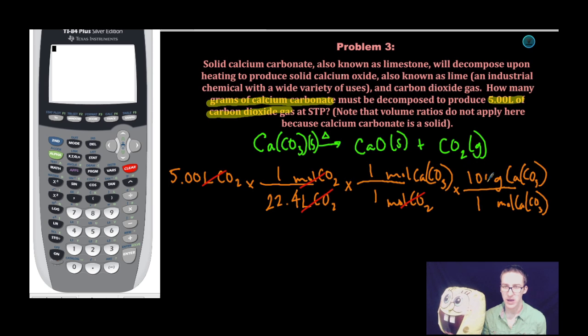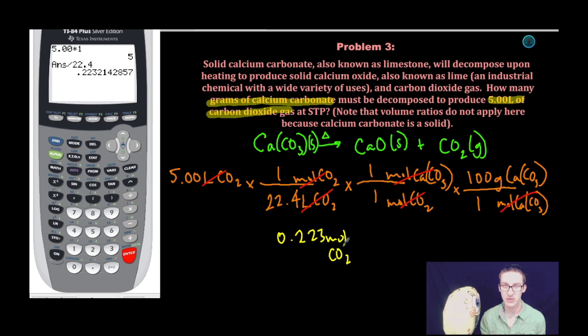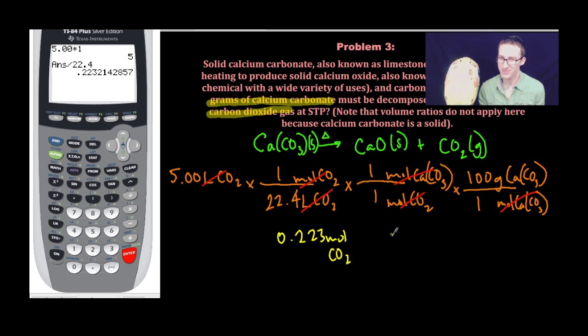The molar mass of calcium carbonate is about 100 grams from my periodic table. I'm going to use my calculator and work through this problem one step at a time. 5.00 liters at STP is definitely less than one mole. In fact, we have approximately 0.223 or about a quarter of a mole. So 0.223 moles CO2, which means that I will need about the same number of moles, 0.223 of calcium carbonate.